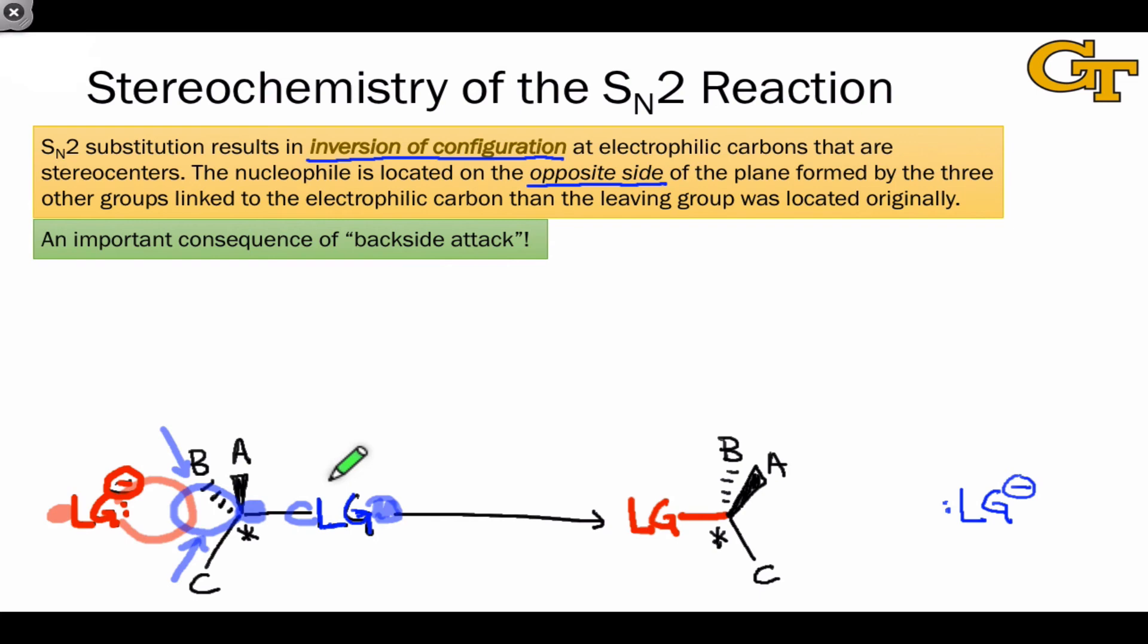This is straightforward to prove using hypothetical priorities. Let's say that the leaving group was priority one, A was priority two, B was three, and C was four. In this case, this stereocenter has the R configuration. And I'll leave it up to you to visualize that. But if you look at the stereocenter from this direction, you'll see that fairly easily.